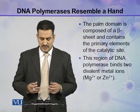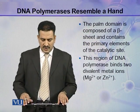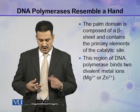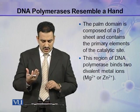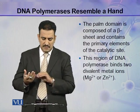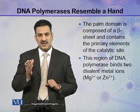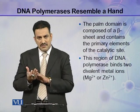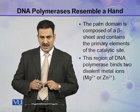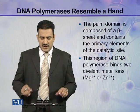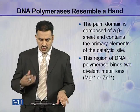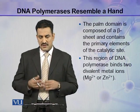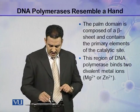The palm domain is composed of a beta sheet — you know about the beta pleated sheet in the structure of proteins. This palm domain contains the primary elements of the catalytic site of DNA polymerase. In the active site of the enzyme, there is a binding site and a catalytic site. This region of DNA polymerase binds two divalent metal ions, either magnesium or zinc, present in the palm domain.